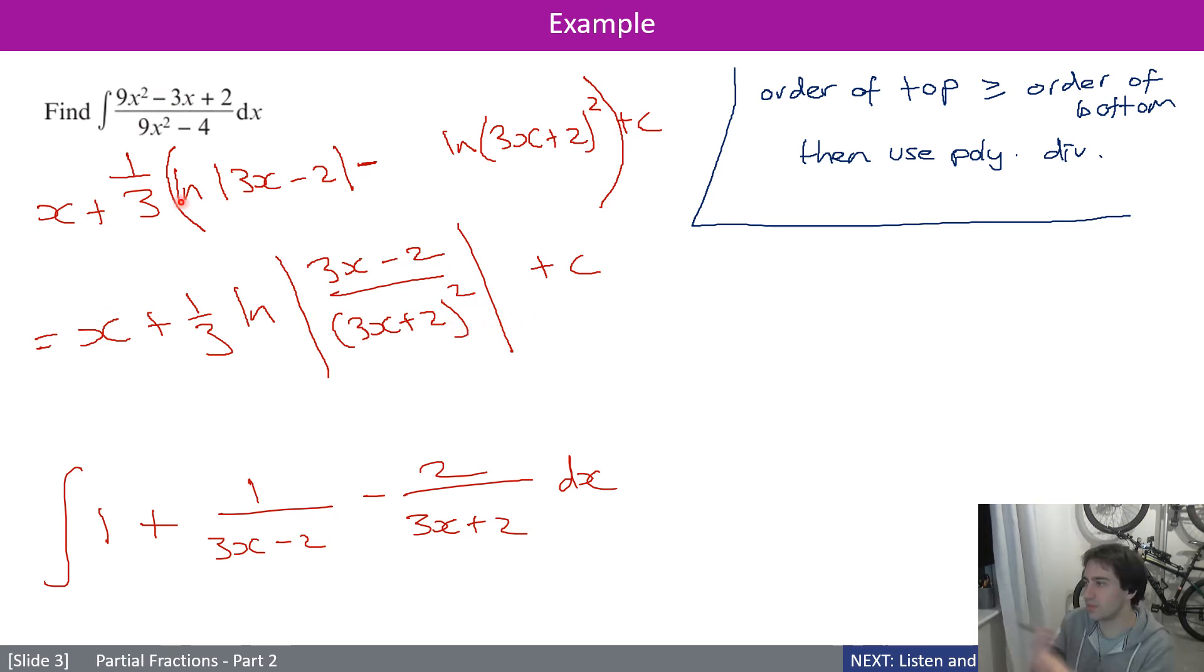So to recap, step one, polynomial division, algebraic division. Step two, partial fractions. Step three, reverse chain rule on the separate parts.